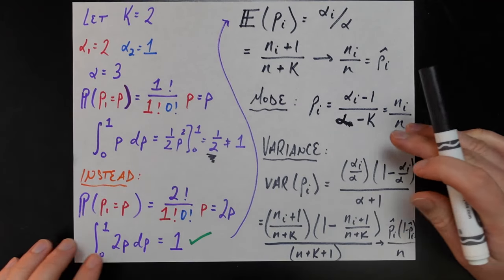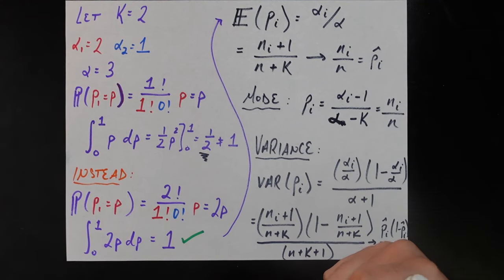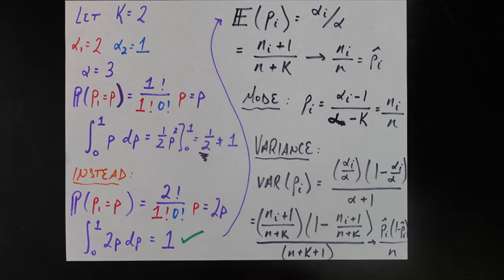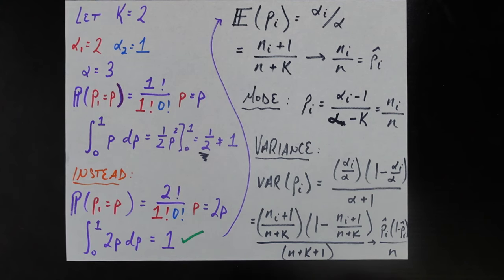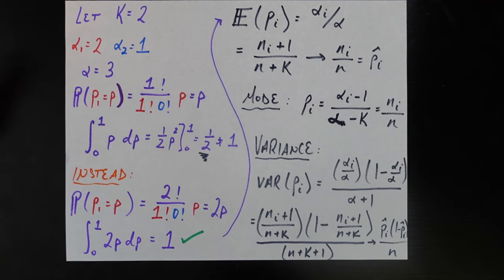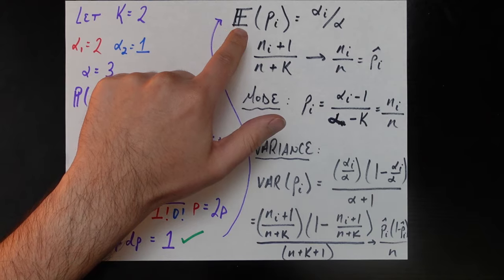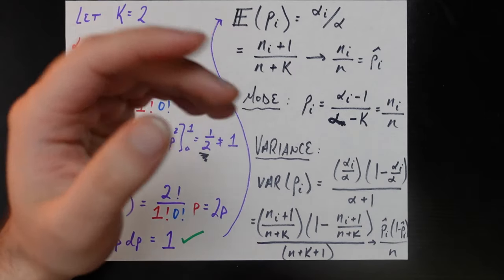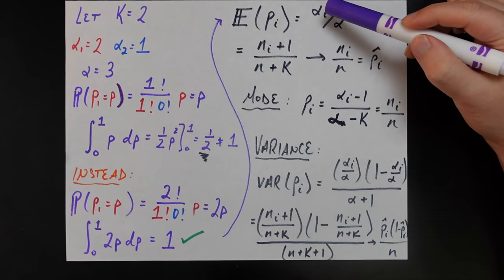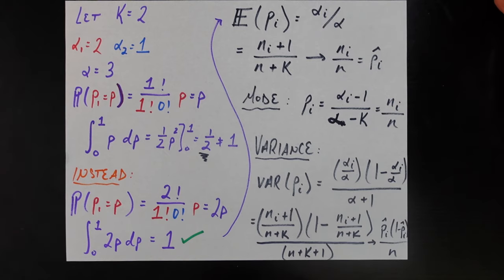Now to close this video out, I just want to note some statistical properties of the Dirichlet distribution and why those properties line up really well with all the intuition we've been building around what the alpha parameters mean. I won't be proving each of these — you could totally do that, it requires taking some pretty interesting integrals — but we'll take them for granted today. The expected value of each probability under the Dirichlet distribution is equal to the appropriate alpha_i divided by the sum of all the alphas.